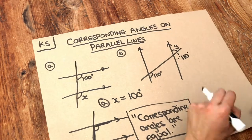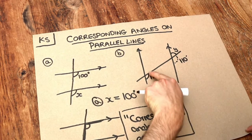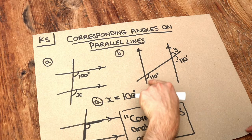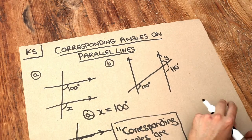And a kind of common sense check is just to check whether your angle remains obtuse or remains acute. This is an obtuse angle. We can see it's more than 90. This is also more than 90. So it's probably going to be right.